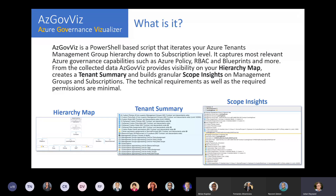From the collected data, we create three main information areas. The first is a hierarchy map - a visual understanding of how your management group hierarchy is structured. Second, we create a tenant summary, where all capabilities are summarized from the tenant's point of view. Third is a granular scope insight on the management groups and subscriptions. Technical requirements are minimal - just a couple of commandlets installed and reader permissions.